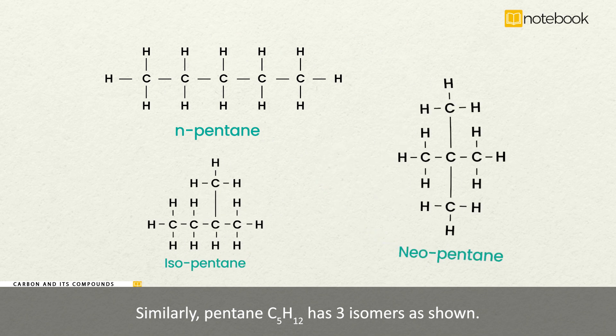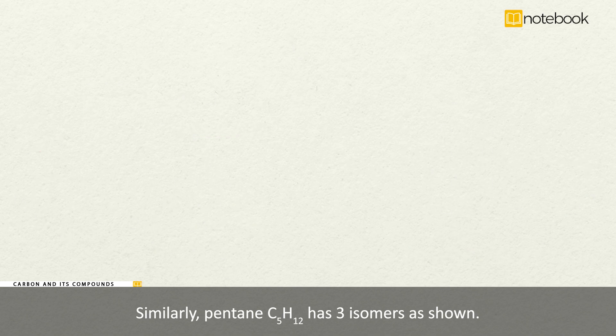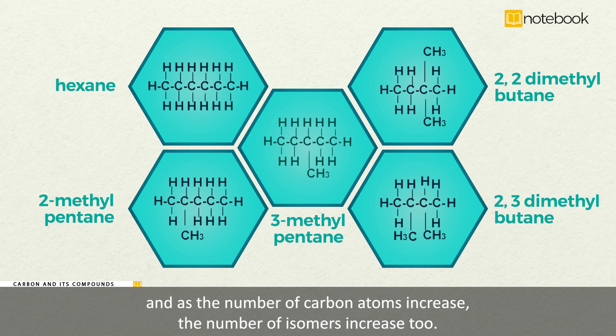Similarly, pentane C5H12 has 3 isomers as shown. Hexane C6H14 has 5 isomers as you can see on the screen, and as the number of carbon atoms increase, the number of isomers increase too.